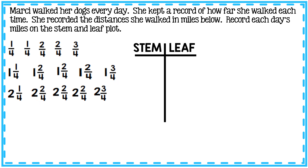It's important to know that these fractions are already in least to greatest order, but you won't always have data that's pre-ordered. You need to put it in least to greatest order yourself if it's not already. Now let's start placing these fractions on the stem and leaf plot.